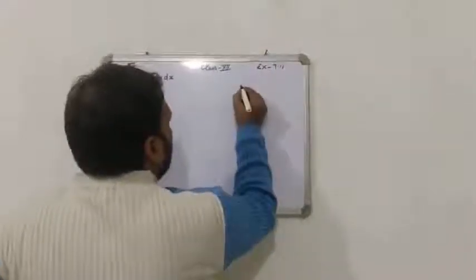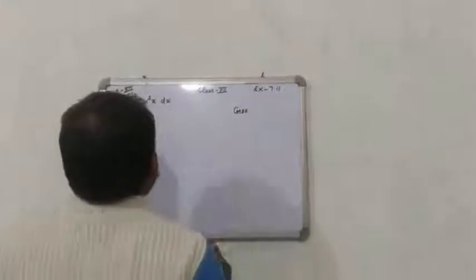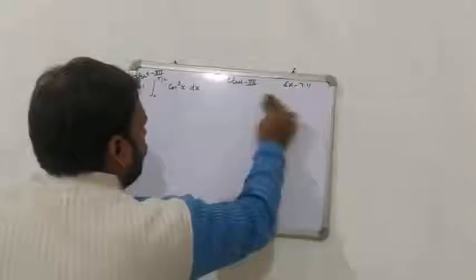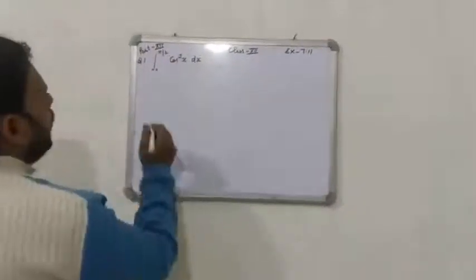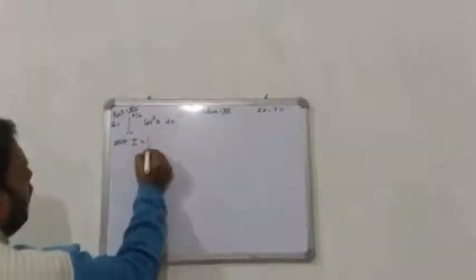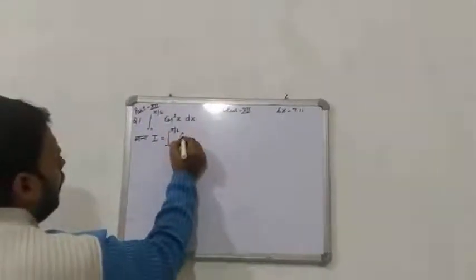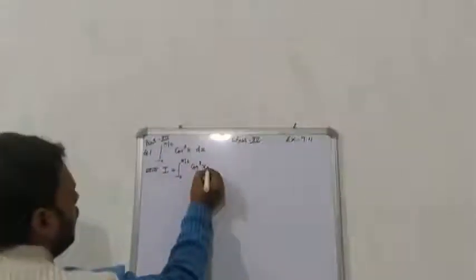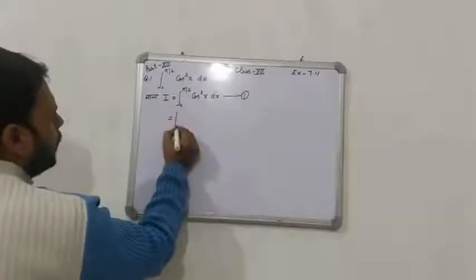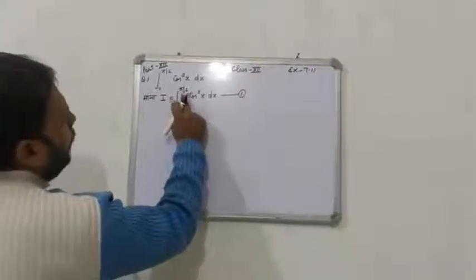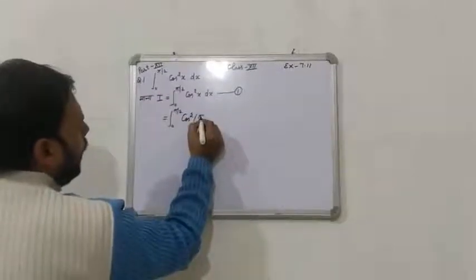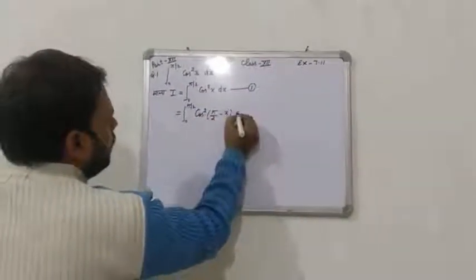देखिए, हमने इसको ऐसे लिखा: माना I बराबर, 0 से π/2 limit, cos²x dx. एक हमारा प्रकुम होता है — 0 से π/2 की अपर लिमिट में से x को माइनस कर देते हैं। तो यह क्या हो जाएगा: cos²(π/2 − x) dx.